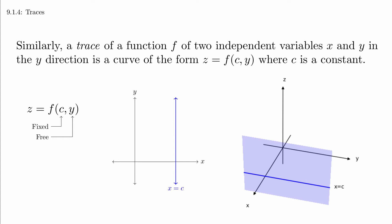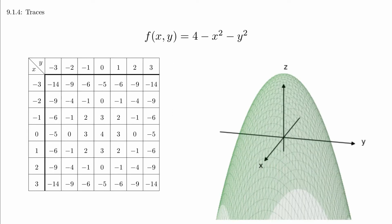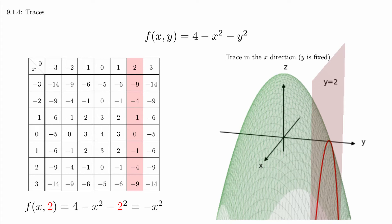We've actually seen these traces already, but we didn't bring any attention to them. When we were graphing by plotting points, we created a grid of values and then we also showed a graph of the function. We'll draw on the trace in the x-direction along y equals 2 and highlight those values in the chart.